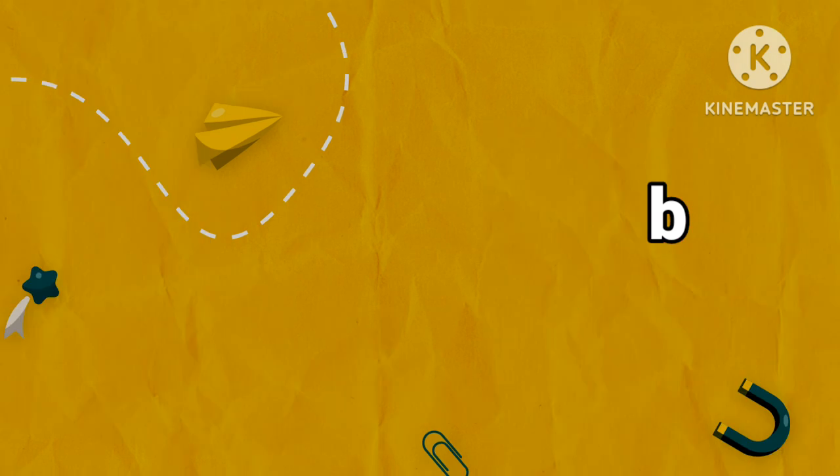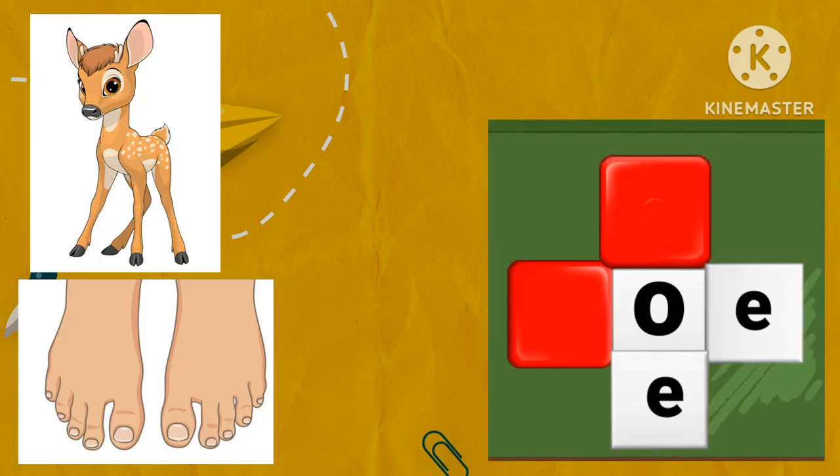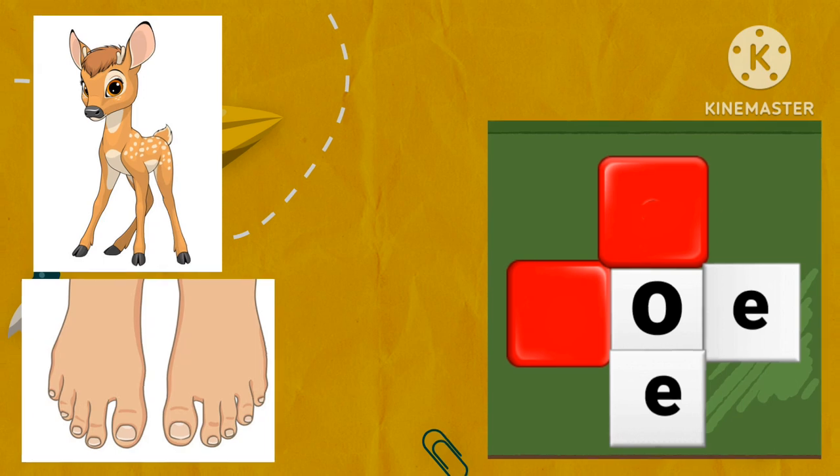Next, look at the pictures. Do, to. Which letters are missing? Letter D and letter T. Drop letter D for do and letter T for to.